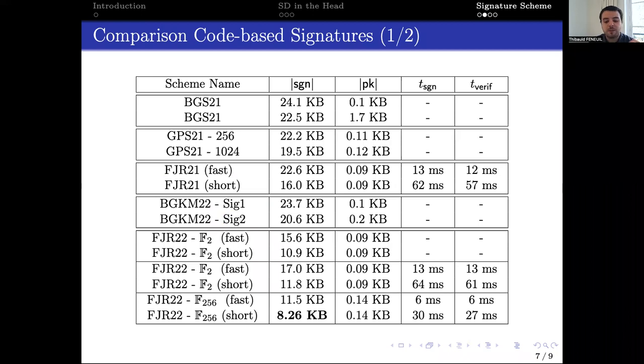Let us compare our scheme with the other code-based signatures derived from zero-knowledge proofs. We can observe that the obtained signature sizes are less than for all the former schemes. We are the first such scheme which can produce signature sizes below the symbolic cap of 10 KB.